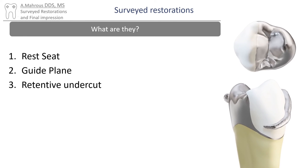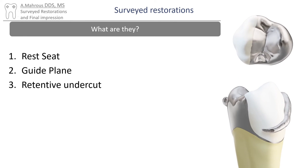It is worth noting that all parts of the surveyed crown that are contacting clasp components should be made in metal, except for the retentive clasp, because generally the porcelain will wear the metal over time, so it's preferred to place metal components on metal. However, retentive clasps are usually in visible areas, so the rule is broken in this circumstance for the sake of aesthetics.